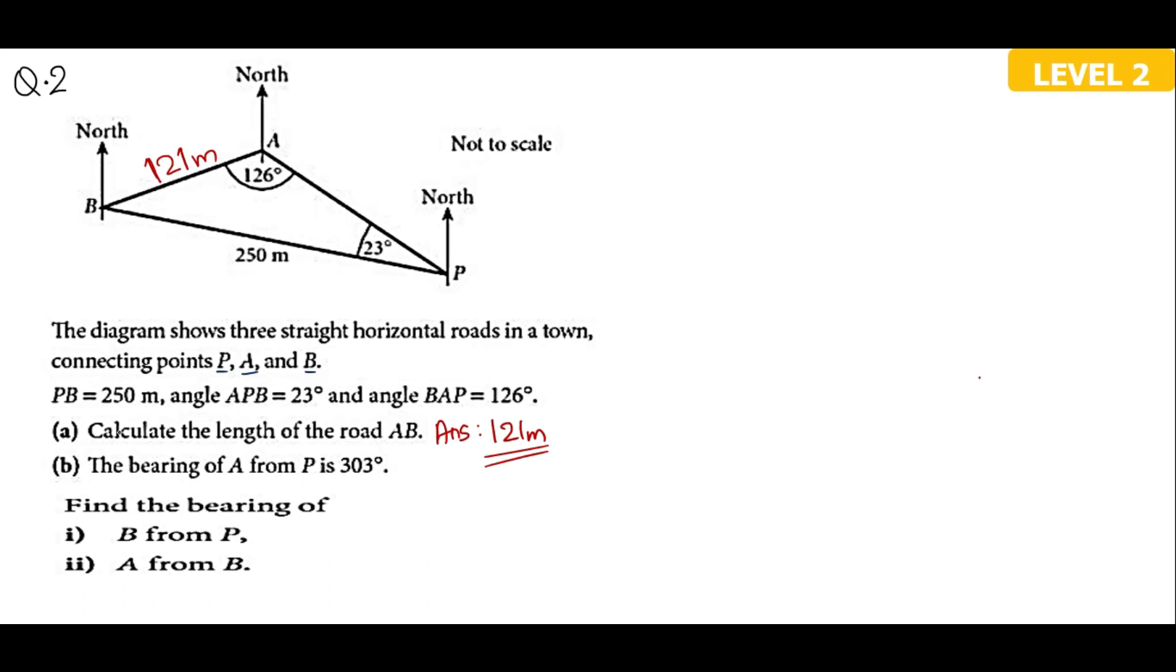Moving to part B, the bearing of A from P is 303 degree. Now bearing of A from P. So you start the measurement from P and you move up to the line AP because it's a bearing of A from P. This angle that you can see here is given to you as 303.